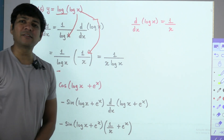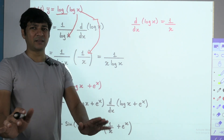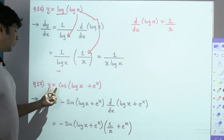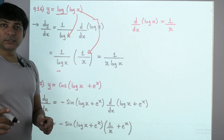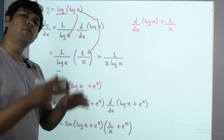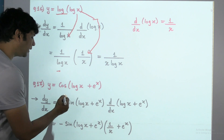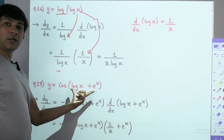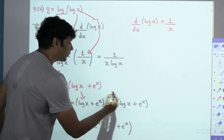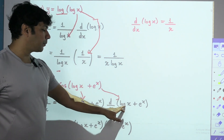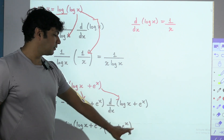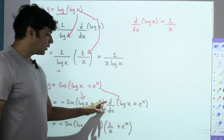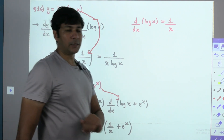Seventeenth question: y = cos(log x + eˣ) — a 2-level chain problem. Differentiation of cos of whatever is in the bracket is −sin of whatever is in the bracket, into differentiation of the bracket separately. Differentiation of log x is 1/x and differentiation of eˣ is eˣ. Answer: −sin(log x + eˣ) · (1/x + eˣ).